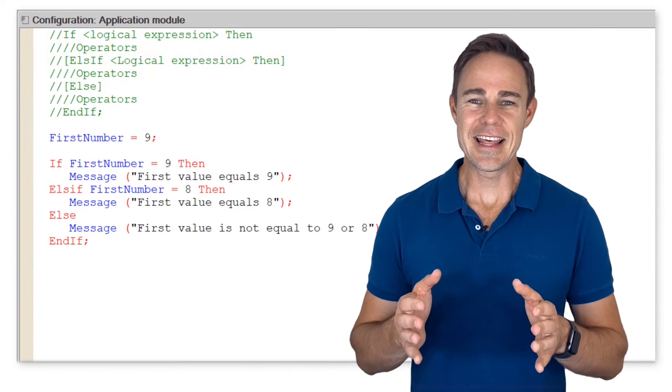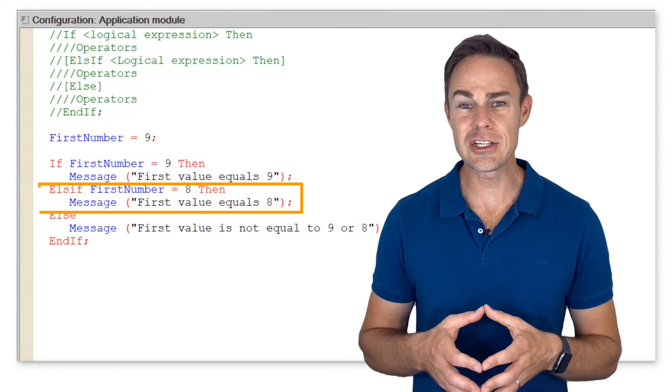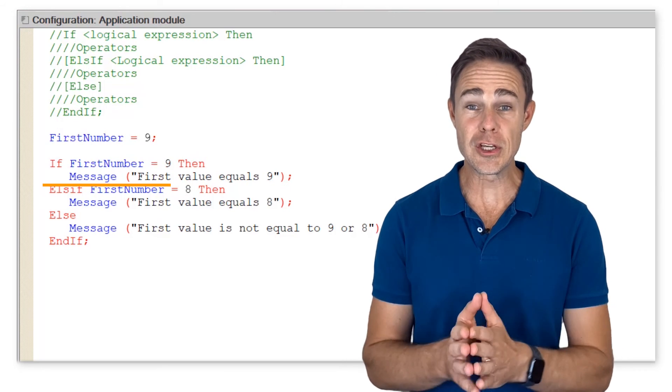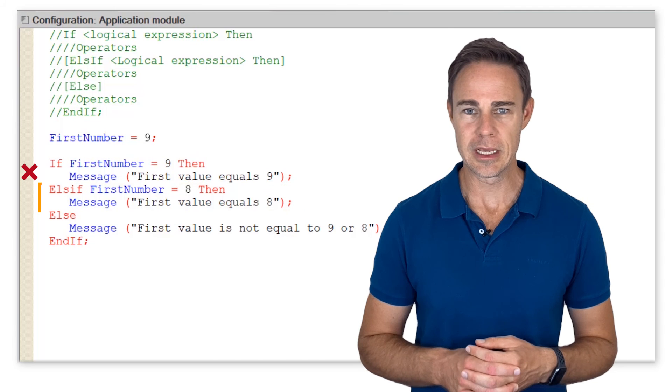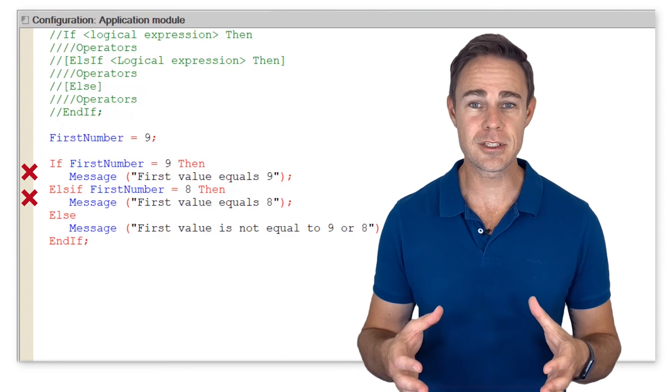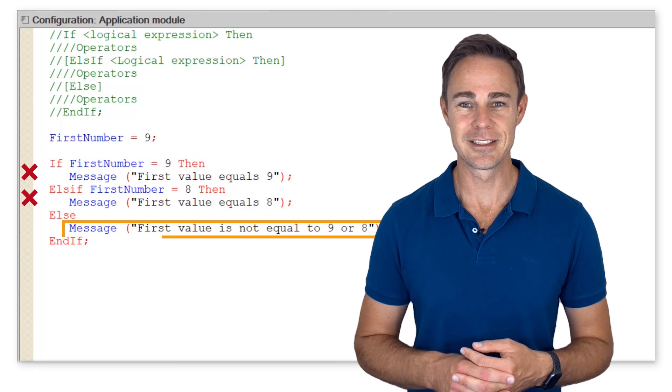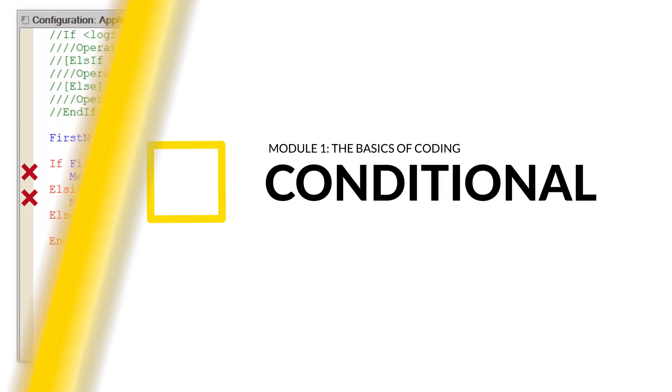Notice that the number of else if conditions is unlimited. So if the first condition is false, the program checks the second condition. If the second condition is false, it applies the operator after else.